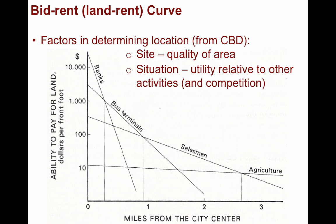For instance, in this graphic, banks require great access to a massive number of people to be profitable, so they must often be located very close to the CBD, whereas most agricultural activities are more profitable further away.